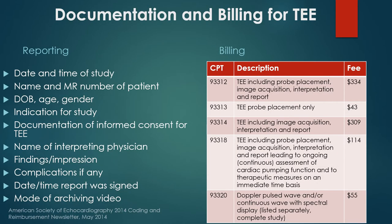Regarding documentation and billing for TEE: CRNAs can bill for use as monitoring at approximately $114. If a cardiologist interprets the recorded study and provides their name, findings, and impression, billing can reach $334. If you're simply placing the probe for the cardiologist to use, the technical component is approximately $43. These are the relevant ICD billing codes for completeness.